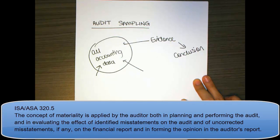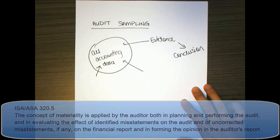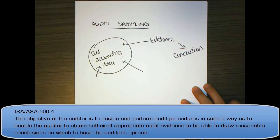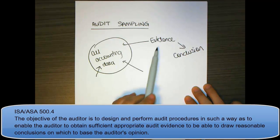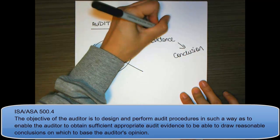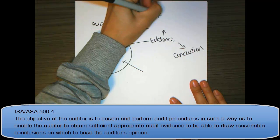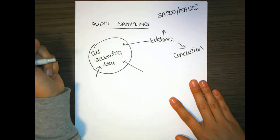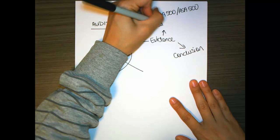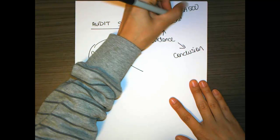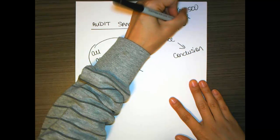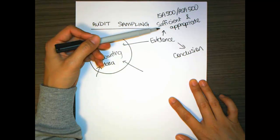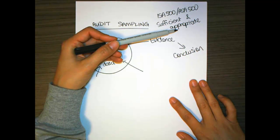Remember to look up ISA 320, or ASA 320 if you're using international auditing standards, for materiality. Now our evidence must be, according to ISA 500 or ASA 500, because they're identical, sufficient and appropriate. So sufficient means enough in terms of quantity, and appropriate means the right sorts of evidence. So you've used the right mix of audit procedures and the right sources of documents.